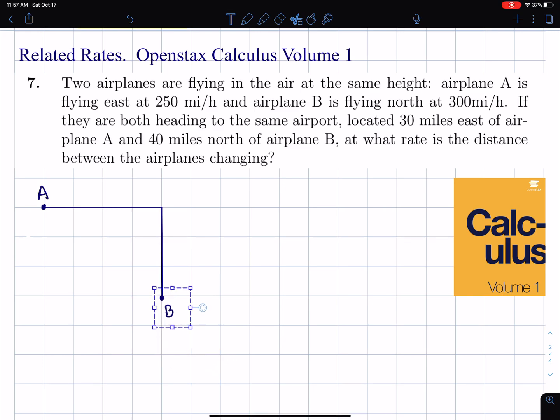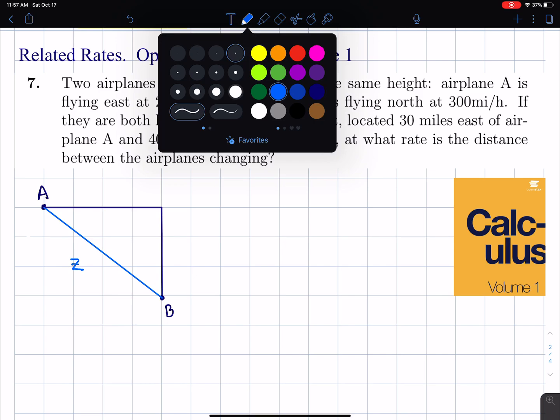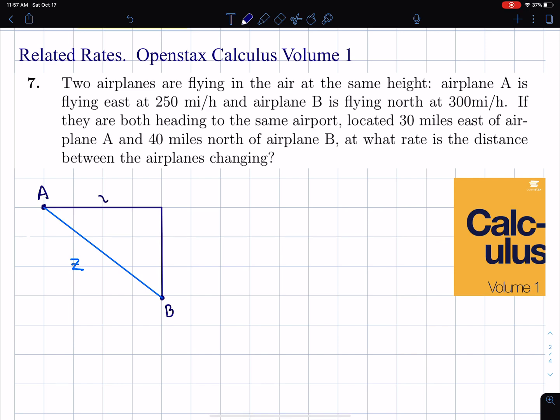What we're asking to find is at what rate is the distance between the airplanes changing. The distance between the airplanes I will model by drawing a line segment between A and B, and I'm going to label that side as Z.